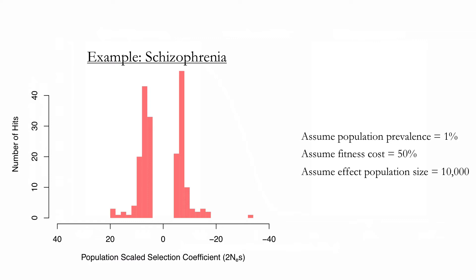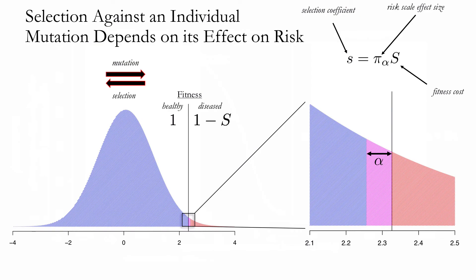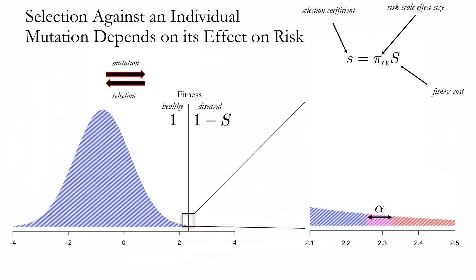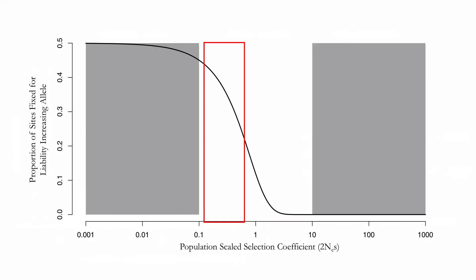However, if we assume reasonable literature-based estimates of a fitness cost of about 50% and a long-term effective population size of about 10,000, that puts the population-scaled selection coefficients — the product of 2Ne and S — in the range of 5 to 15, which is inconsistent with observing an equal number of protective and risk mutations. However, note that the risk-scale effect size, and therefore the selection coefficients, clearly depend on the prevalence. If the ancestral prevalence was considerably lower, the effect on risk — the purple area — would have been lower, and therefore the selection coefficients lower as well. For example, if we suppose the ancestral disease prevalence was around 0.05%, this puts us more in the regime where drift is on equal footing with selection, making it plausible that a substantial number of sites could be fixed for the liability-increasing allele and therefore capable of producing derived protective mutations.